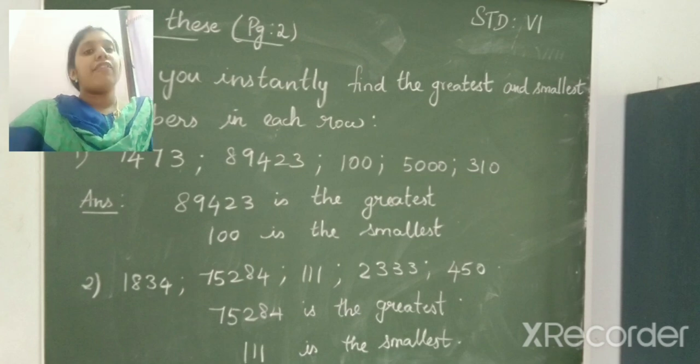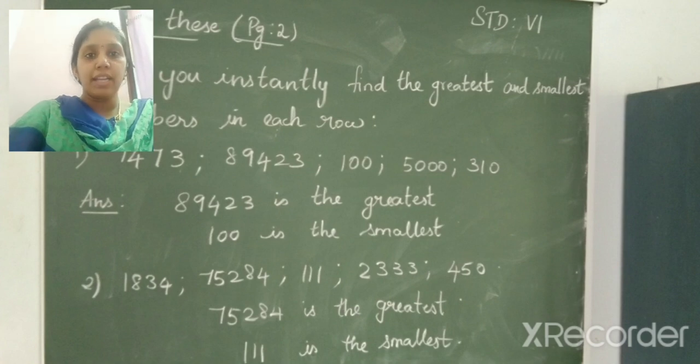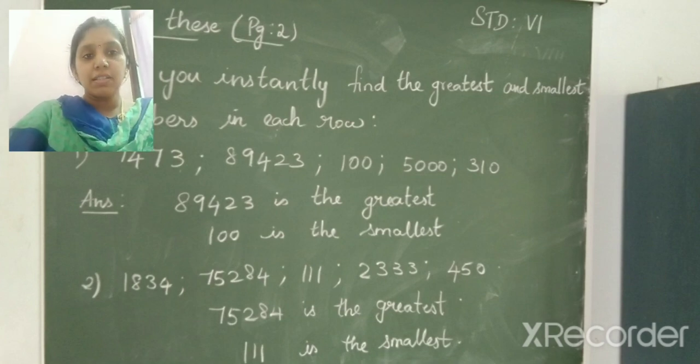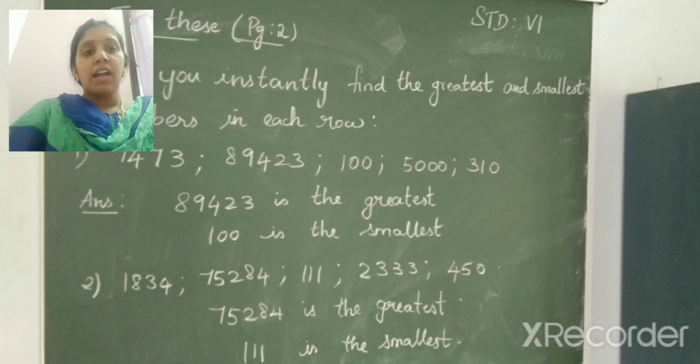And the number having less number of digit is 111 and 450. So which is the smallest number? 111.